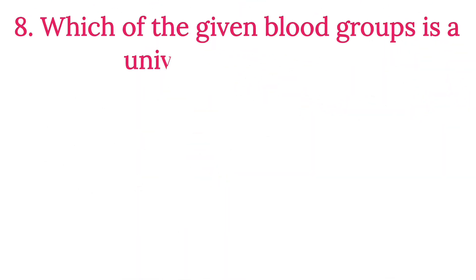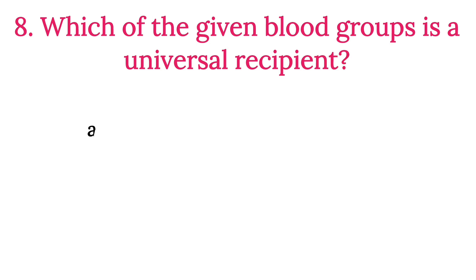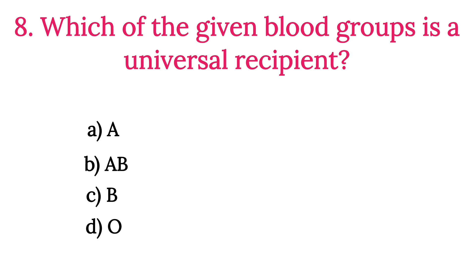MCQ Number 8: Which of the given blood groups is a universal recipient? Option A: A Blood Group. Option B: AB. Option C: B Group. Option D: O Group. The correct option is Option B, AB.